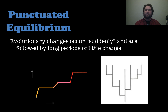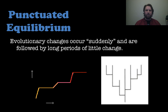The opposite of gradualism is punctuated equilibrium — evolutionary changes that happen suddenly (in geologic terms), though really over thousands and thousands of years. These bursts of change are followed by long periods of little change. So you have quick change, then nothing, then quick change again.